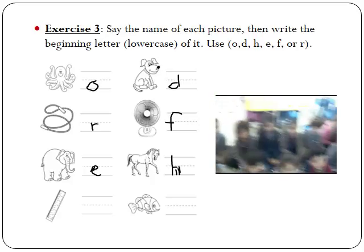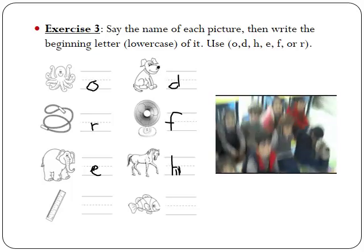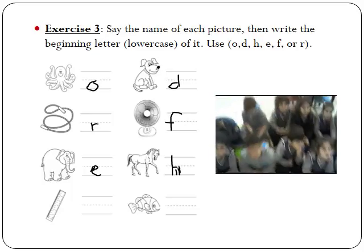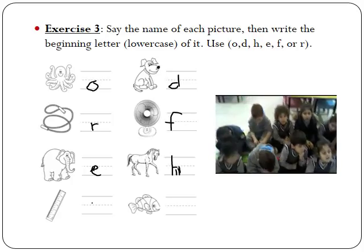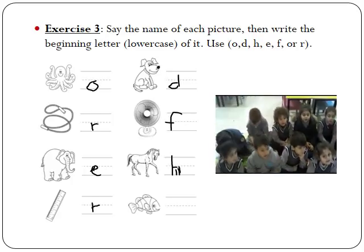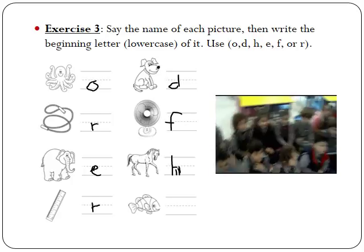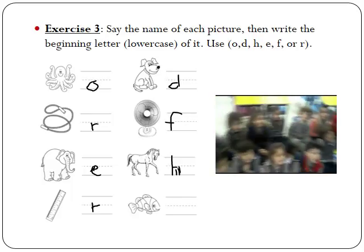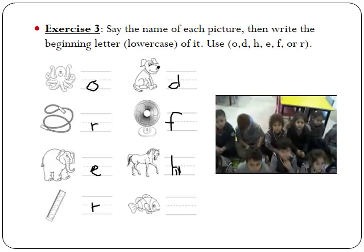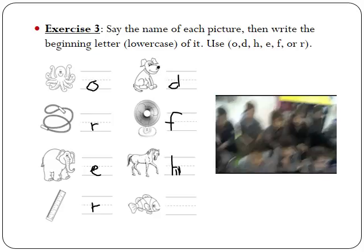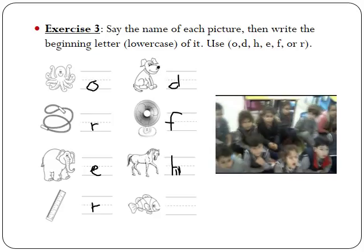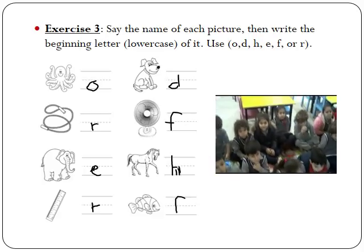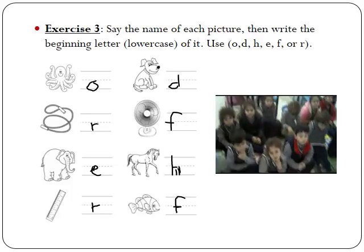Okay, let's move to the ruler. It begins with the letter — which letter should I write? R. And the last picture, can you make the sound? F, F, F. Should I write letter A? No. Which letter should I write? F.